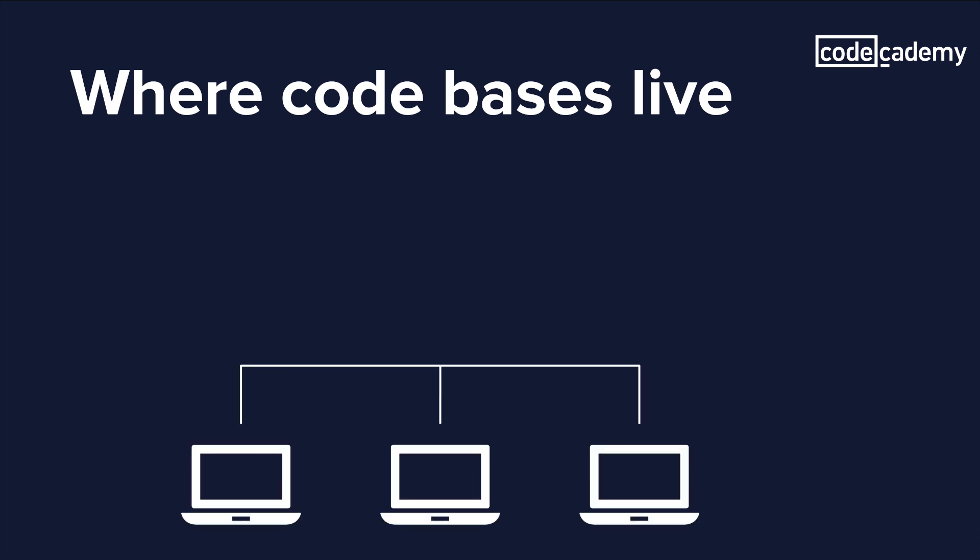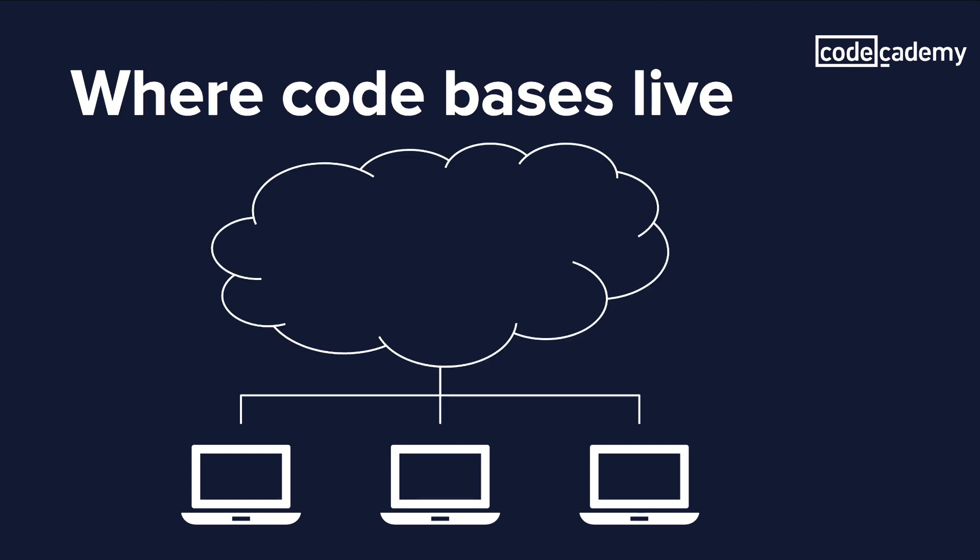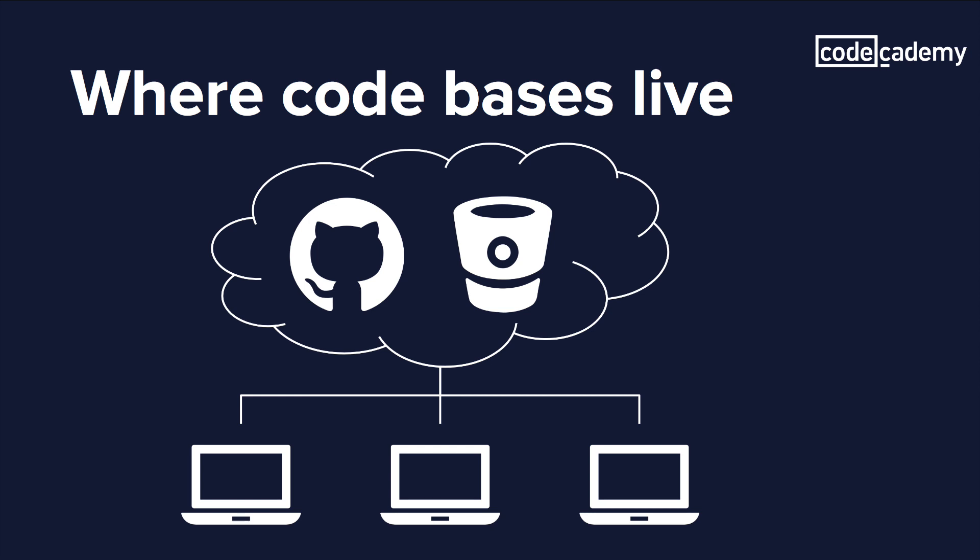A lot of code bases are stored on version control systems — things like GitHub, Bitbucket, and Stash are all common examples of where code bases might live. One of the good reasons for storing code bases on platforms like these is that they provide processes for good communication between developers, they allow developers to work in parallel so multiple programmers can work on the code base at once, and they also provide ways to ensure new code isn't breaking anything — for example, you can run tests on the code right from these websites.